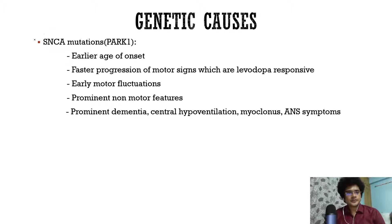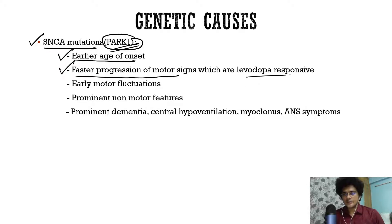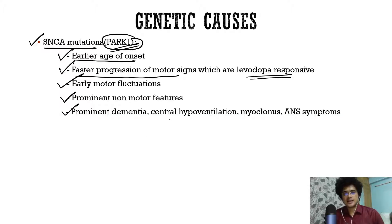Coming to genetic causes: SNCA mutations are known as PARK1. They are very rare. Features include earlier age of onset, faster progression of motor signs that are levodopa-responsive, early motor fluctuations, prominent non-motor features, and other features like dementia, central hypoventilation, myoclonus, and autonomic dysfunction.